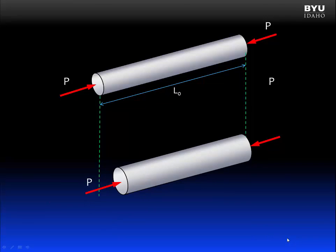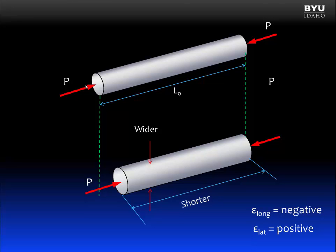What happens when we reverse the forces? Here, the member is feeling a compression force. What happens to its length? It gets shorter. So our longitudinal strain is negative. What about our lateral strain? The lateral dimension becomes wider. So our lateral strain is positive. With this in mind, we can define Poisson's ratio.